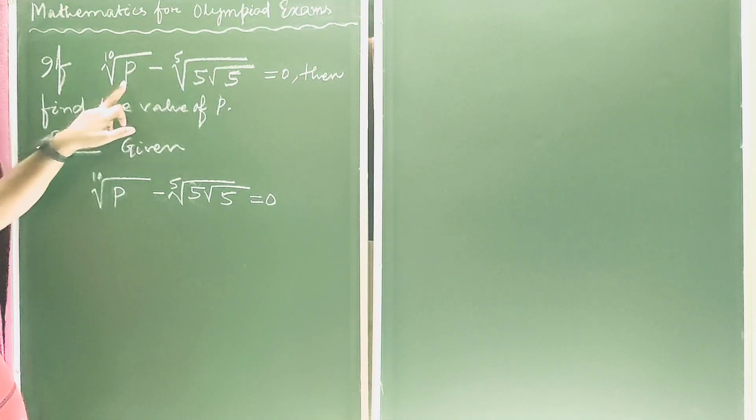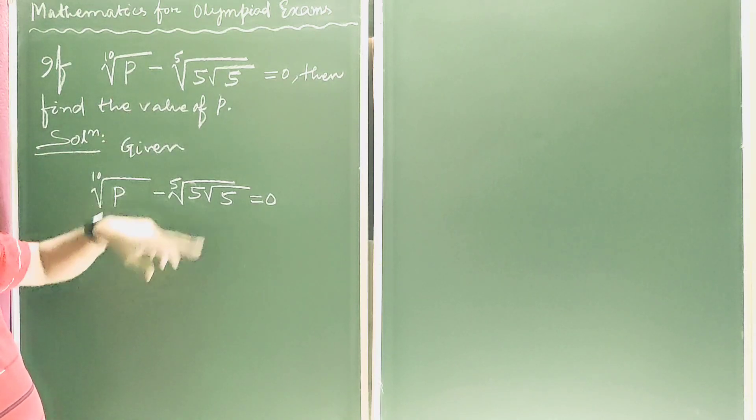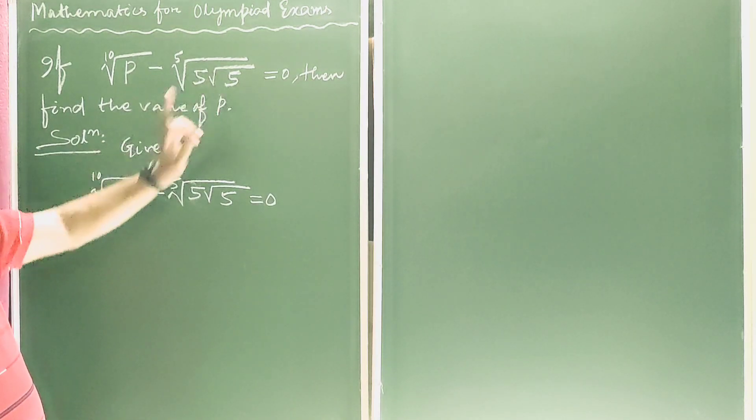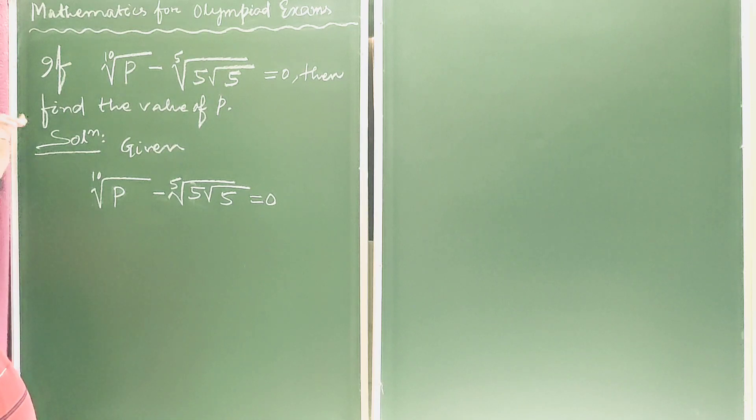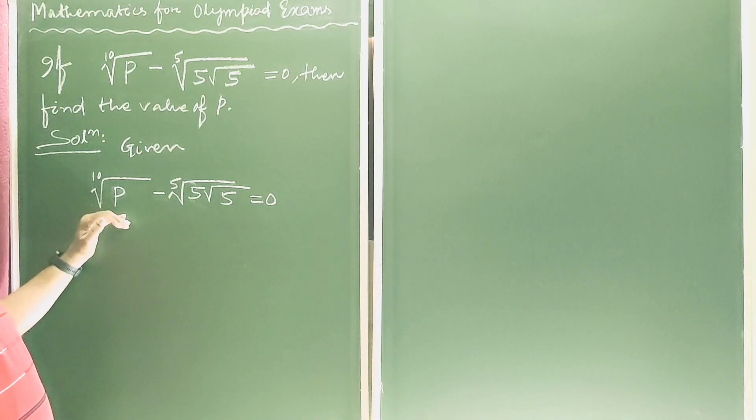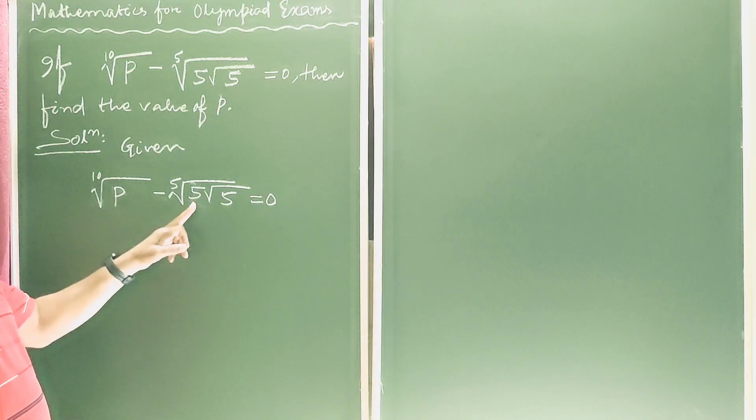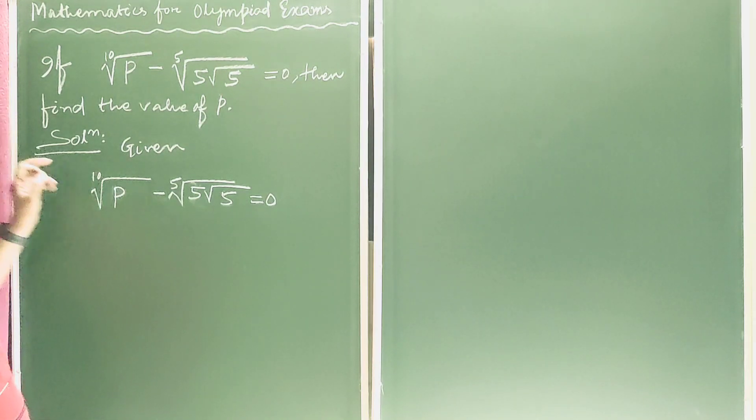If 10th root of p minus 5th root of 5 root 5 is equal to 0, then find the value of p. Here it is given 10th root of p minus 5th root of 5 root 5 is equal to 0.